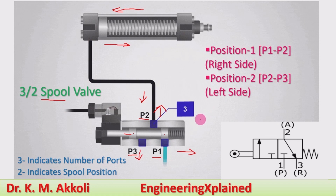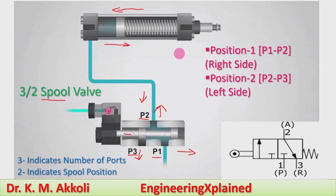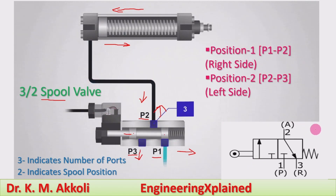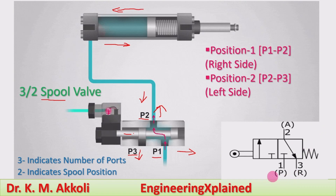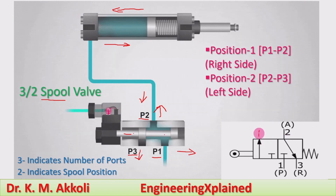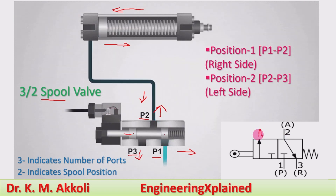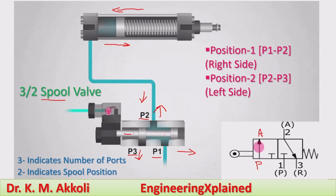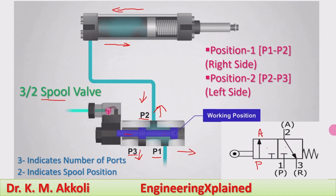With these two positions, this full valve works, and the working of the single-acting cylinder takes place in the hydraulic system. This can also be symbolically represented. In the symbolic representation, the pump port P1 in the left position is connecting to the actuator, and we show the two positions — this is one position and this is another position.